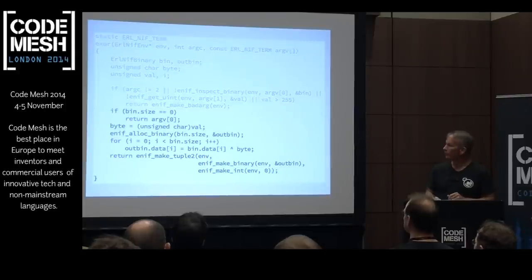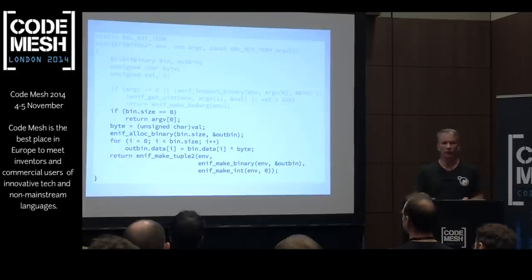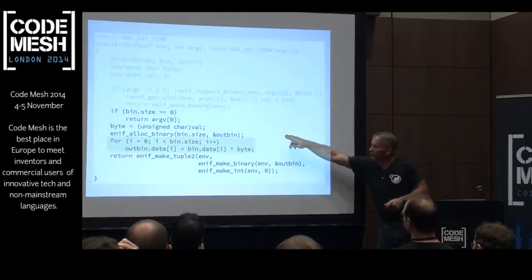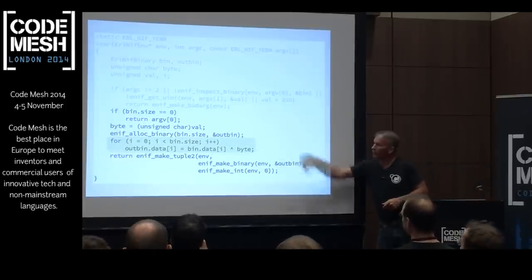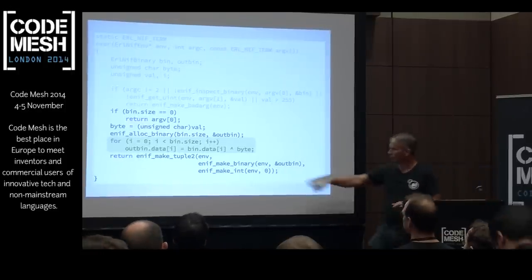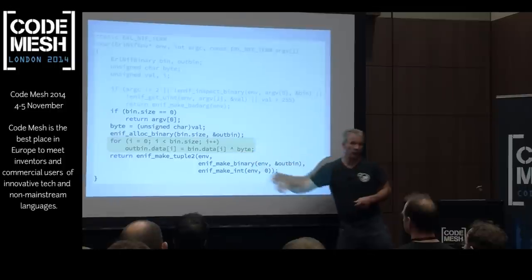Assuming we passed all the right stuff, we first check our binary — if it's size zero, we have no work to do and just return the original binary. If we do have work to do, we allocate a binary and loop through every byte doing an exclusive OR.